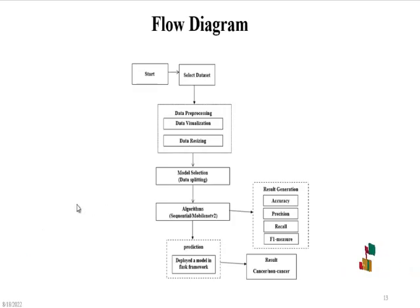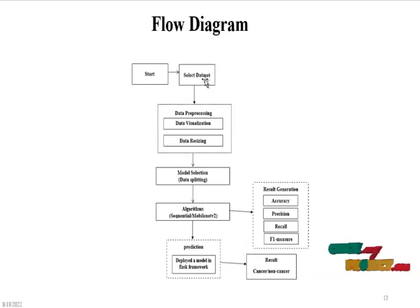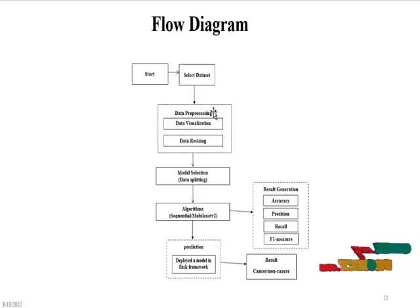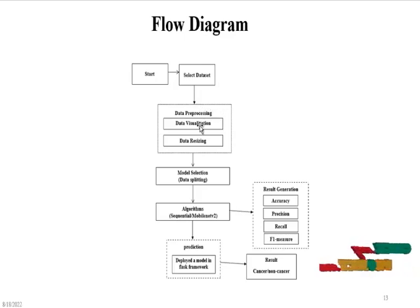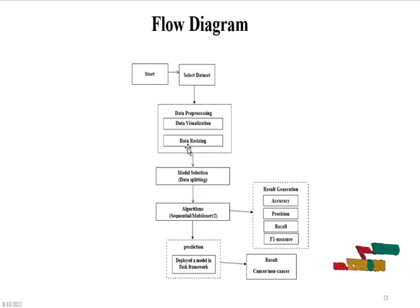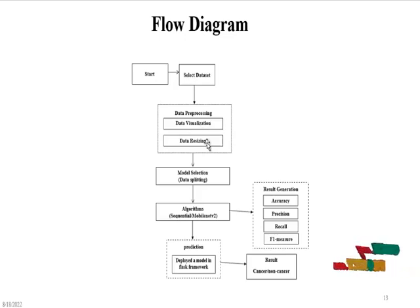Next, we discuss the flow diagram. First, we select the dataset — the oral cancer dataset. The second process is data pre-processing, where an imbalanced dataset is converted into a balanced dataset. We first load the dataset, and then apply data resizing.